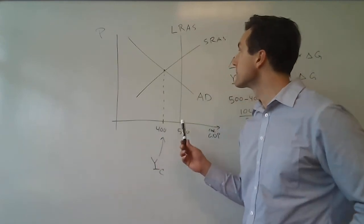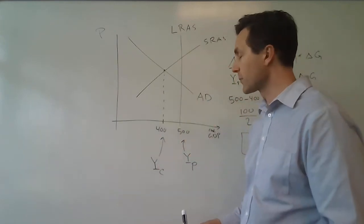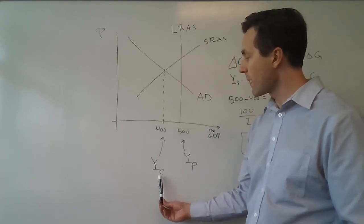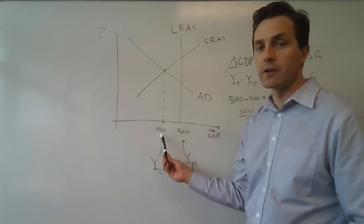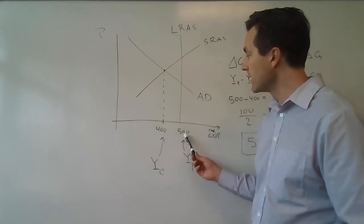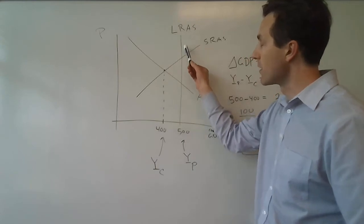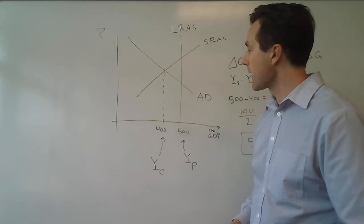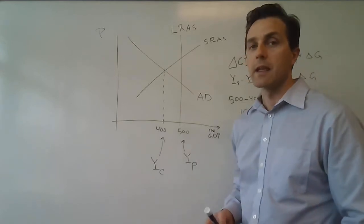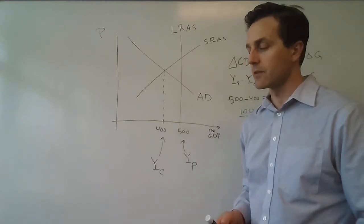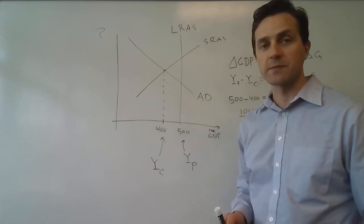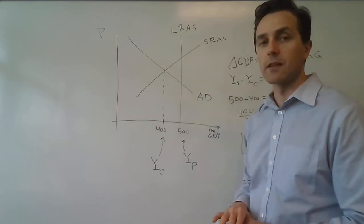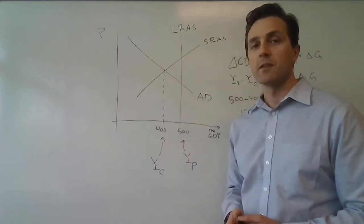Over here this shows what's going on in the economy. We have the aggregate supply and aggregate demand model, and we see that the economy has a current outcome Y sub C of 400, while potential output Y sub P is 500 — that's the long-run aggregate supply curve. So we are currently at 400 and we want to get up to 500. The idea with fiscal policy is that you have some kind of increase in government spending or decrease in taxes that increases aggregate demand enough to get the economy back up to potential output.